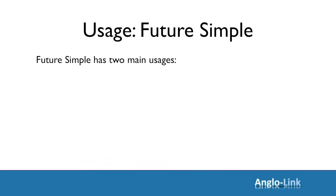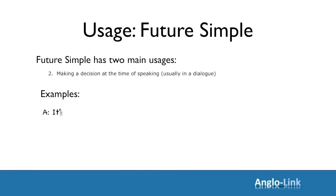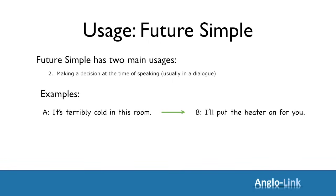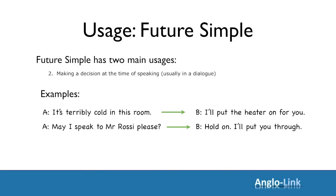The second usage of the future simple tense is when you make a decision at the time of speaking. This usually happens in a dialogue — someone says something or asks you to do something, and you react. And when you react, you use the future simple. For example, someone says it's terribly cold in this room, and you decide at that moment to put the heater on. You say: I'll put the heater on for you. Someone calls and says: May I speak to Mr. Rossi, please? You decide to put them through, so you say: Hold on, I'll put you through.